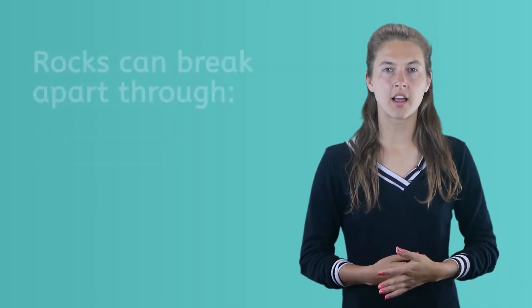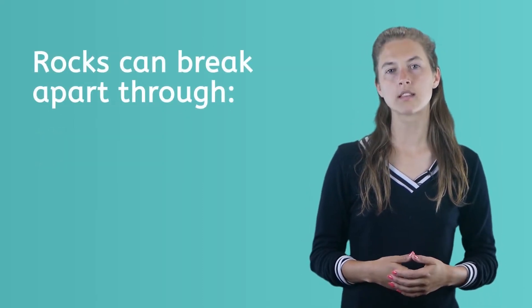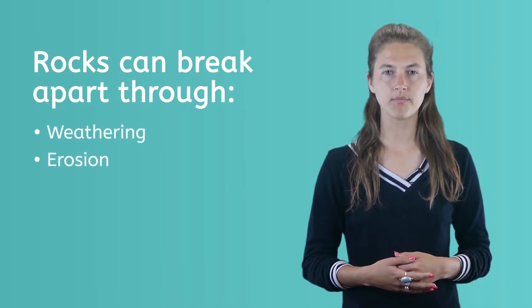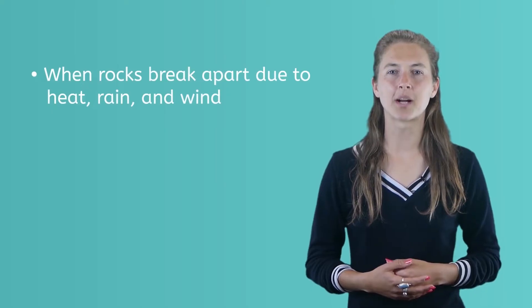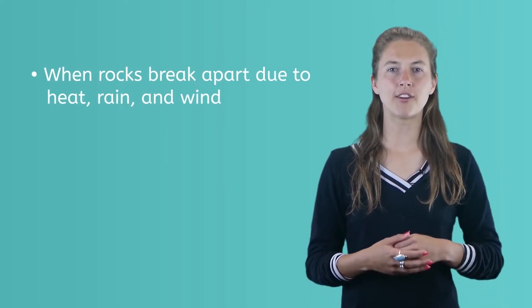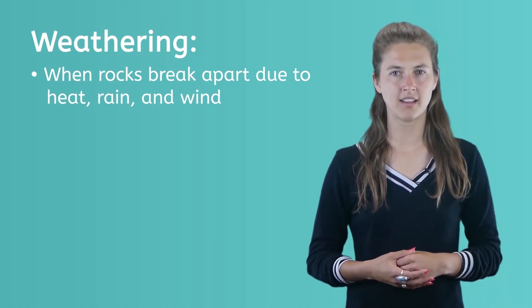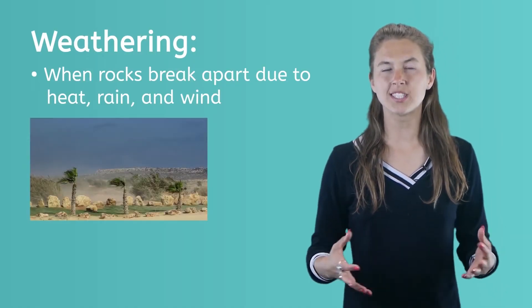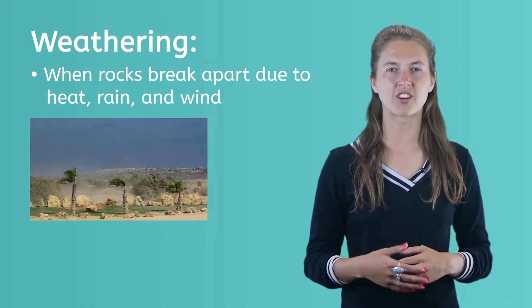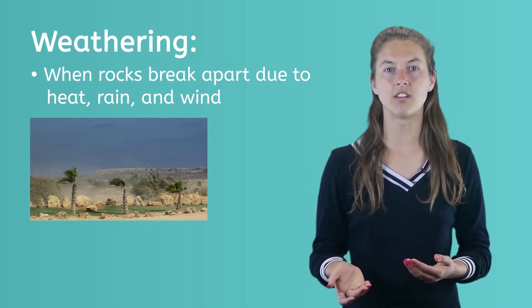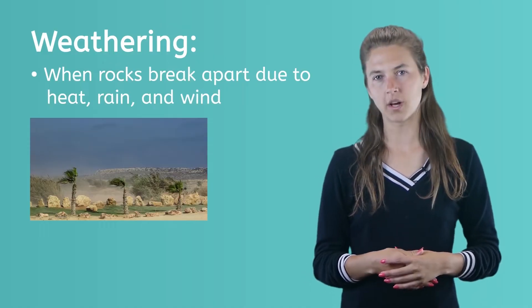Even though rocks are hard, they can break apart in two ways: through weathering or through erosion. When rocks break apart because of weather elements like heat, rain, and wind, we call this process weathering. For example, a really strong windstorm can blow sand particles against the rock and weather it down like a nail file does to nails or sandpaper does to wood.